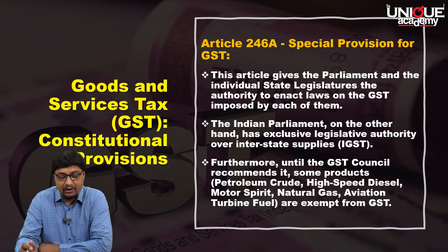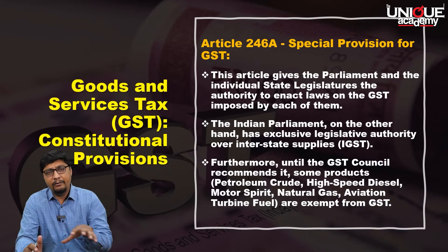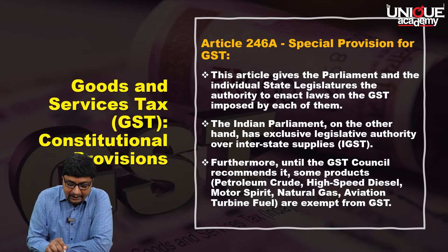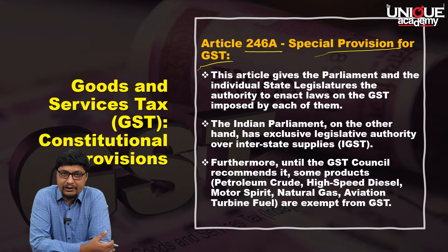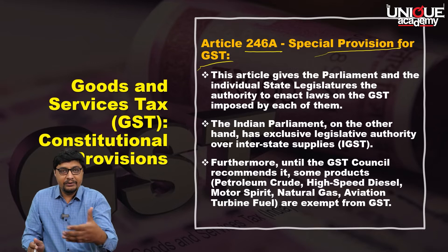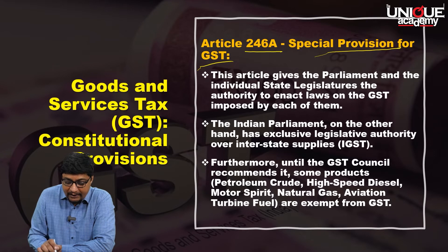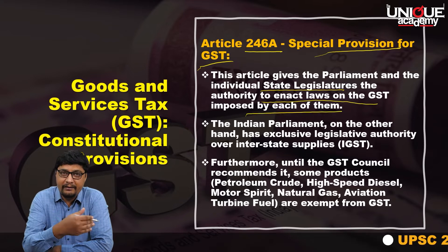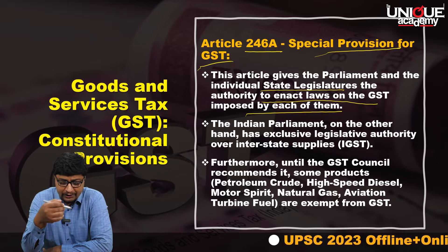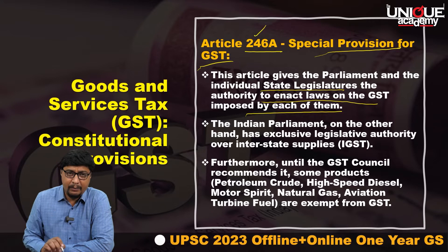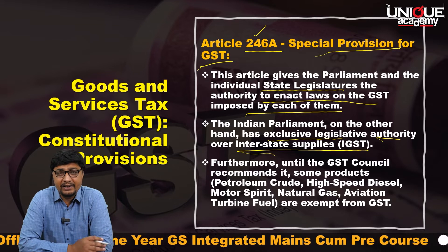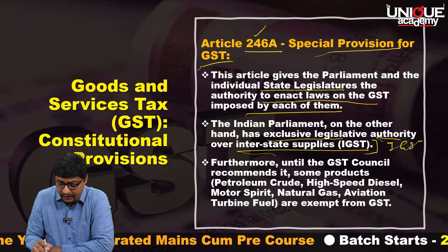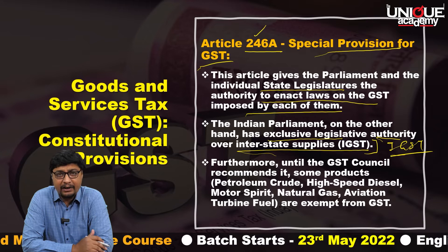Moving to constitutional provisions regarding GST: Article 246A provides special provisions for GST. It gives the Parliament and individual state legislatures the authority to enact laws on GST imposed by each of them. So both state and central governments have the right to create and enact laws regarding GST. Additionally, the Indian Parliament has exclusive legislative authority on interstate supply, that is IGST.